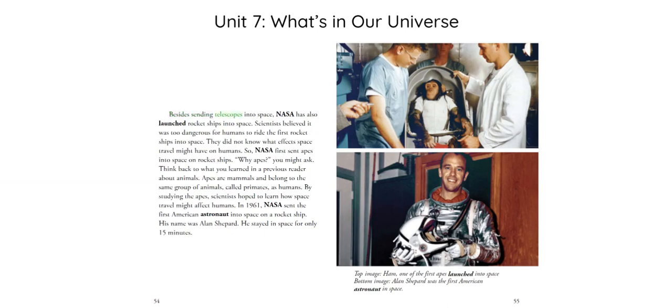Besides sending telescopes into space, NASA has also launched rocket ships into space. Scientists believed it was too dangerous for humans to ride the first rocket ships into space. They did not know what effects space travel might have on humans. So, NASA first sent apes into space on rocket ships. Why apes, you might ask?